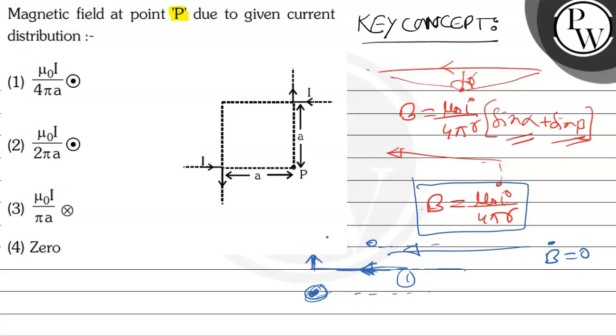This is B1. So you can see that B1 equals mu naught I by 4 pi A. Here we have distance A. This is outward. Outward is a symbol of dot. Inward is a cross.